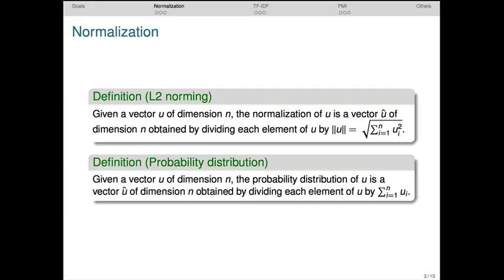We looked briefly at normalization in the context of vector comparison methods. Such methods can also be thought of as a kind of reweighting. Here are two simple normalization methods. The first uses the L2 norm, or vector length, as the normalizing quantity. And the second, a more purely probabilistic view, uses the sum of all the values in the row to create a new normalized vector.